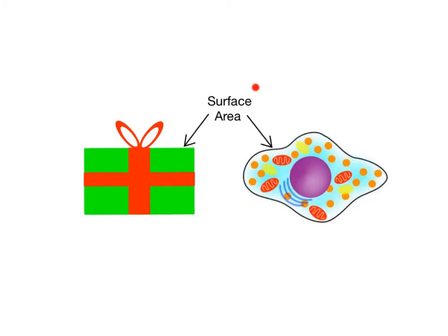The surface area of a membrane is the overall amount of membrane surrounding a cell. When you wrap gifts during the holidays, the amount of wrapping paper you use to cover the gift is like the surface area of membrane wrapped around a cell.